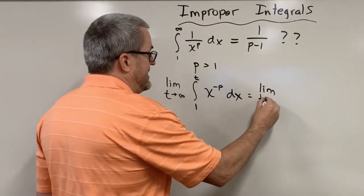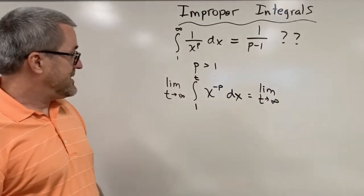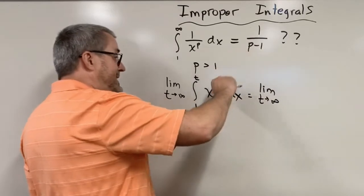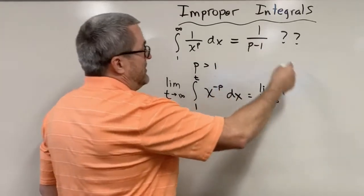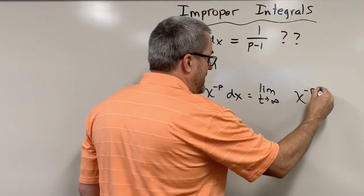Limit as t goes to infinity. Now, the antiderivative of x to the minus p. As you've seen, when we take the derivative, increase the power by one. So now we're going to increase the power by one. So we'll get x to the negative p plus one.